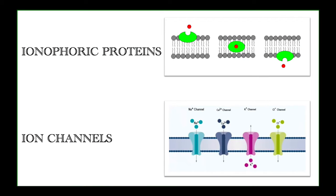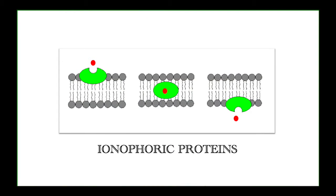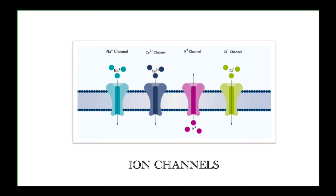There are two types of proteins present in the cell membrane: ionophoric proteins and ion channels. With ionophoric proteins, the protein receives ions on the surface, shows a movement from outside to inside, and releases the ion inside the cell — the ion moves along with the protein across the breadth of the membrane. In ion channels, however, ions like sodium, calcium, protons, and chloride move through a built-in channel with no displacement of the protein, so the membrane remains intact while ions show selective movement.